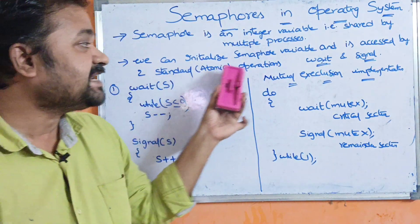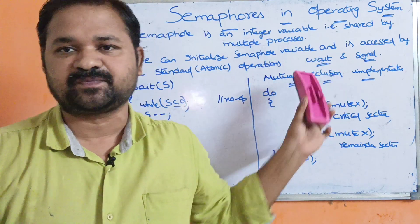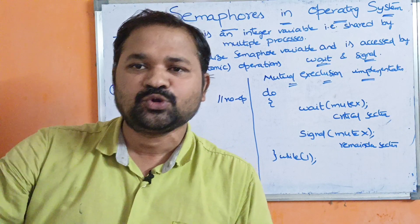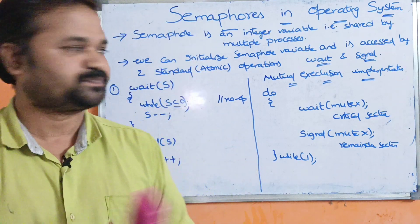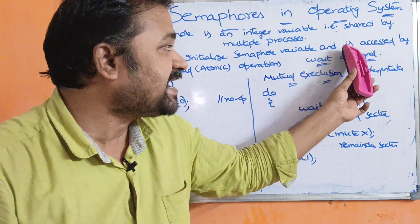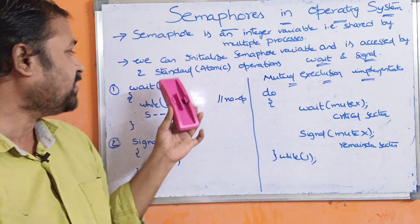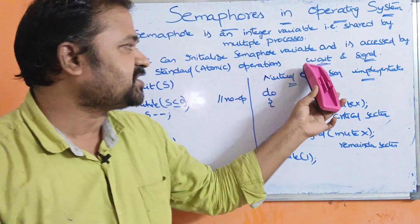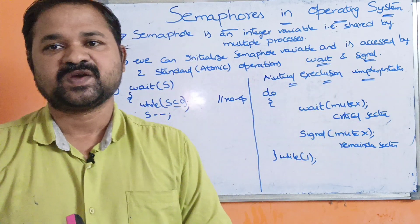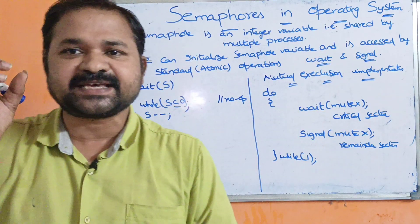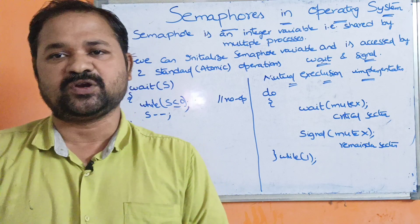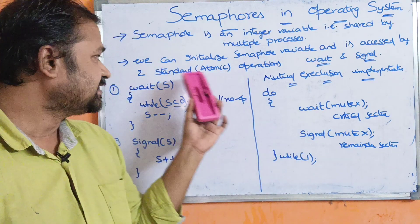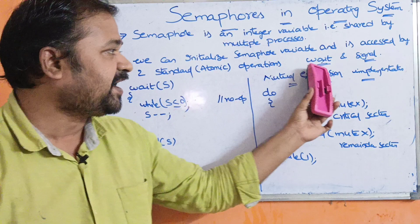We can initialize the semaphore variable by assigning some value to it. We can access the semaphore variable by two standard operations: wait and signal. In order to access the semaphore variable, we mainly perform these two standard operations — wait and signal.